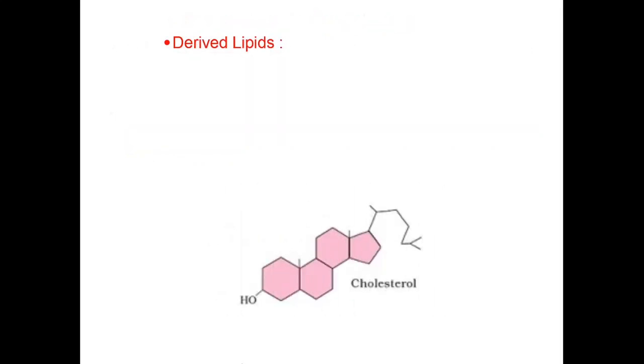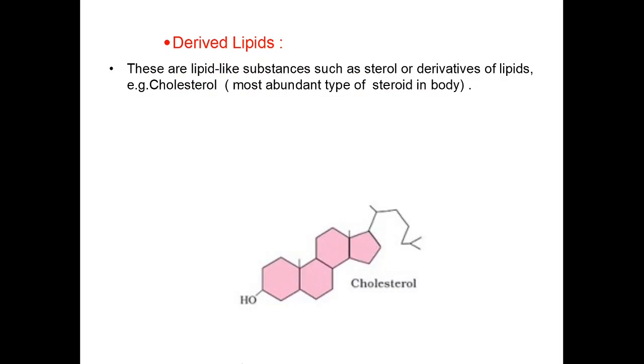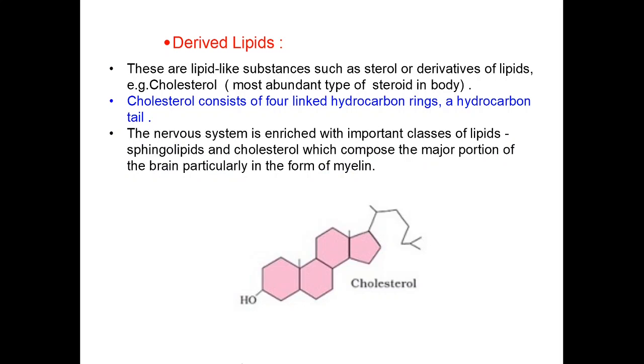Derived lipids are lipid-like substances such as sterol or derivatives of lipids. For example, cholesterol which is the most abundant type of steroid in body. Cholesterol consists of four linked hydrocarbon rings and a hydrocarbon tail. The nervous system is enriched with important classes of lipids like sphingolipids and cholesterol which compose the major portion of brain particularly in form of myelin. This is the diagram of cholesterol. It contains four hydrocarbon rings and this is a hydrocarbon tail.